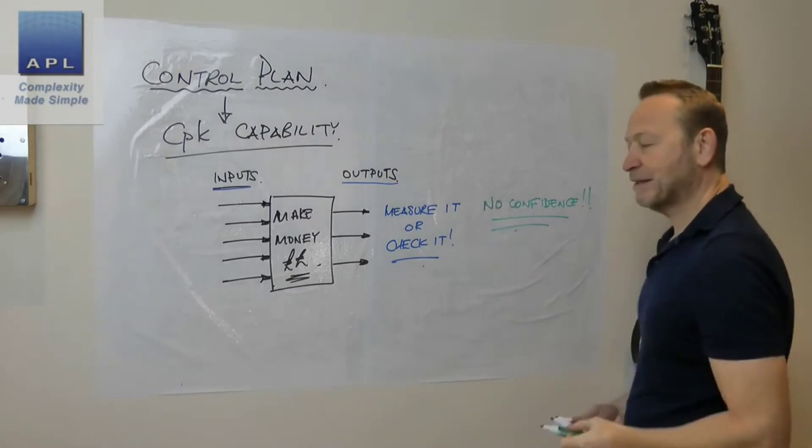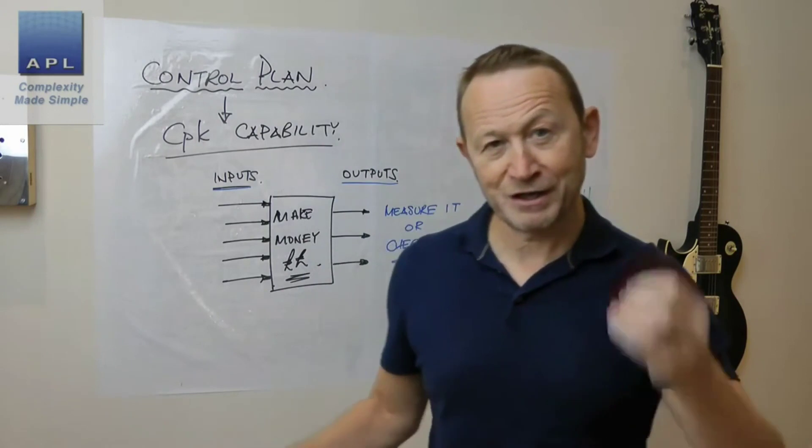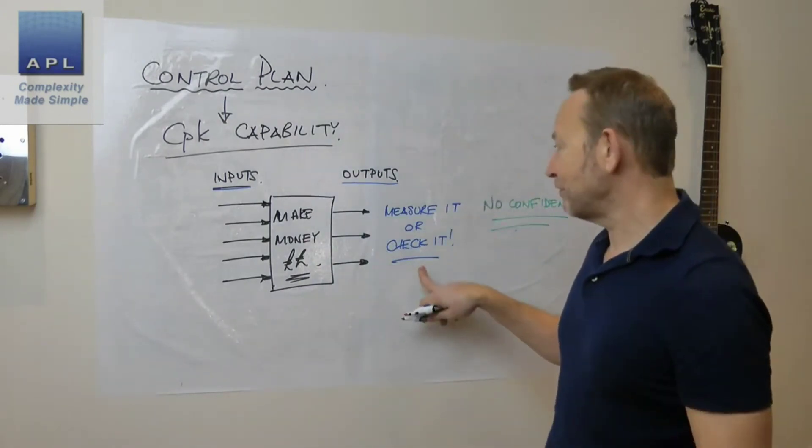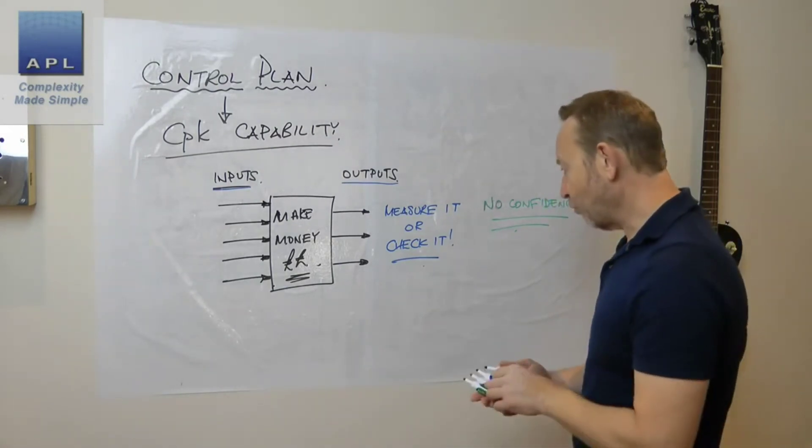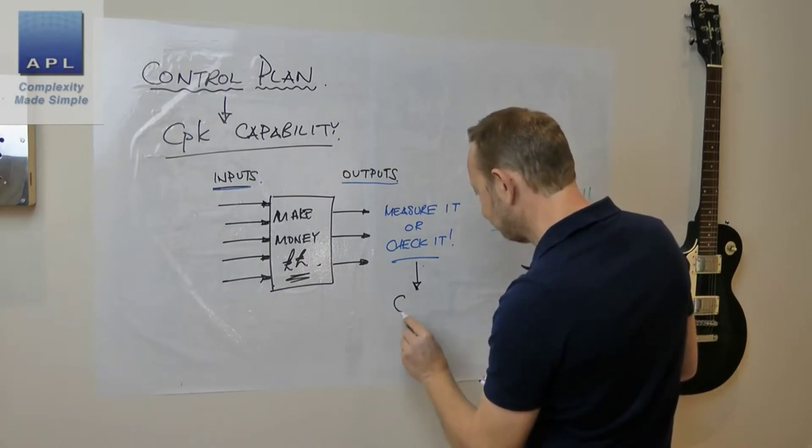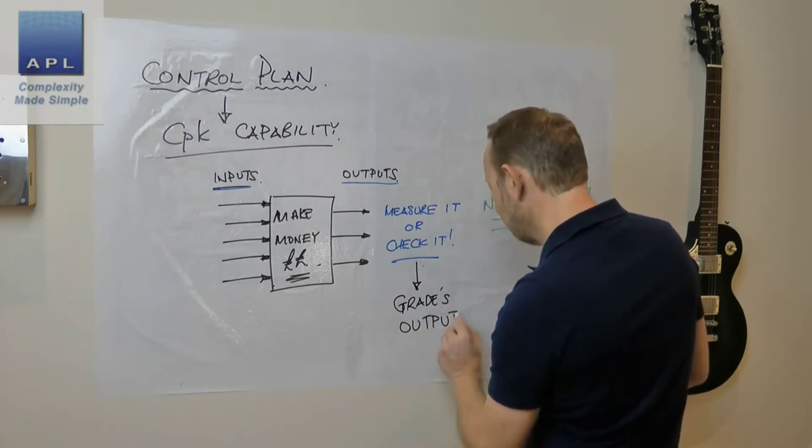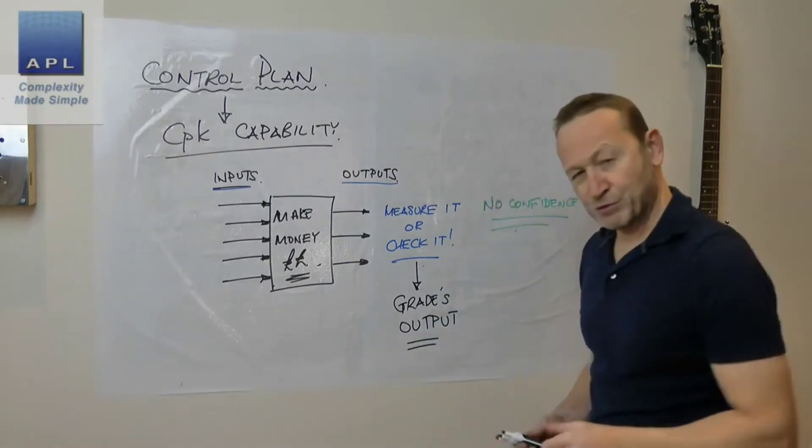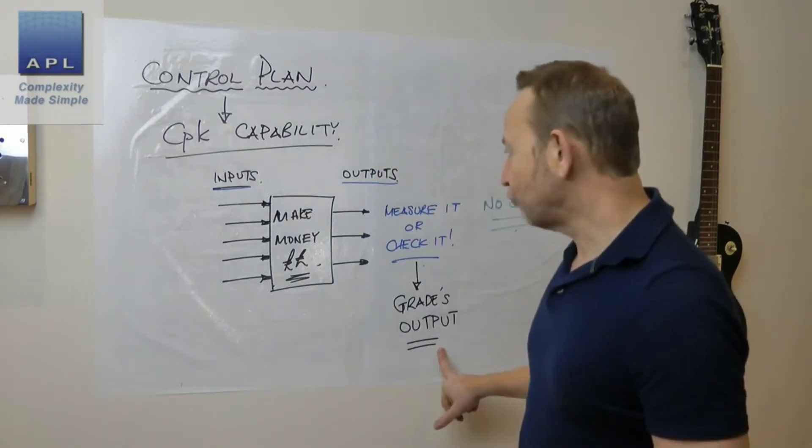What you're basically saying is: I've set my process up, I haven't got a clue whether it's going to work, so I'm going to measure it or check it. All this does is it grades the output—good ones, bad ones, rework, remake, repair. That's all it does, it just grades the output. That's not a control plan, it's an inspection plan.